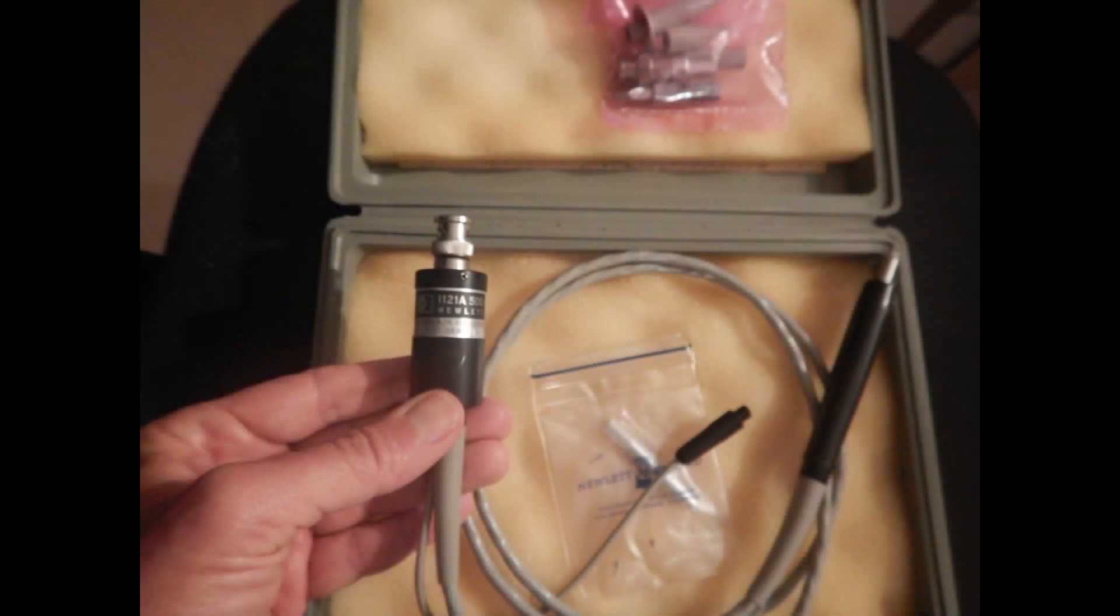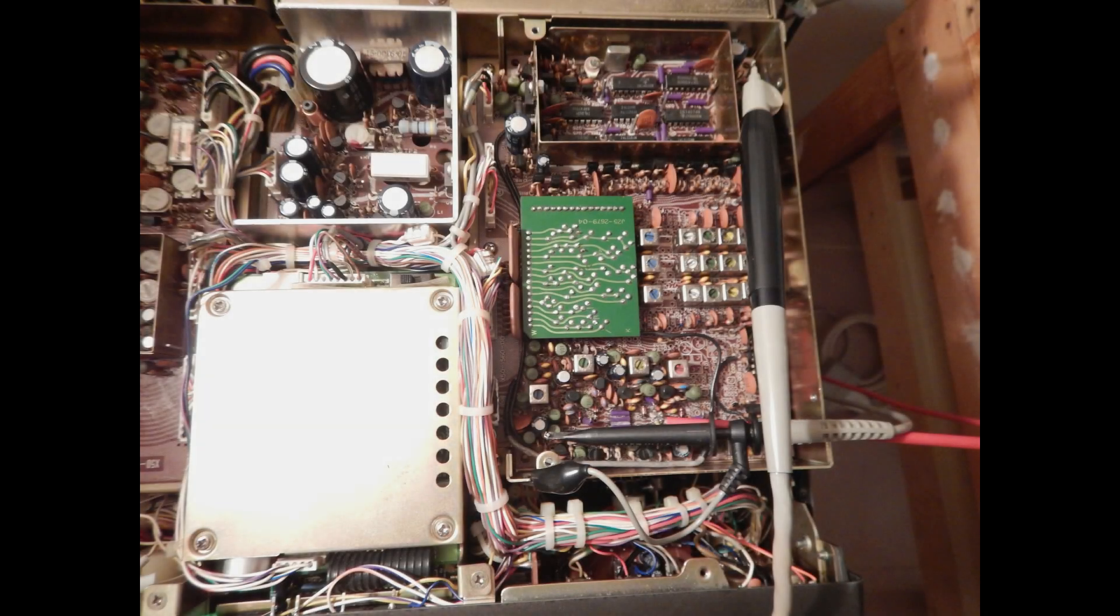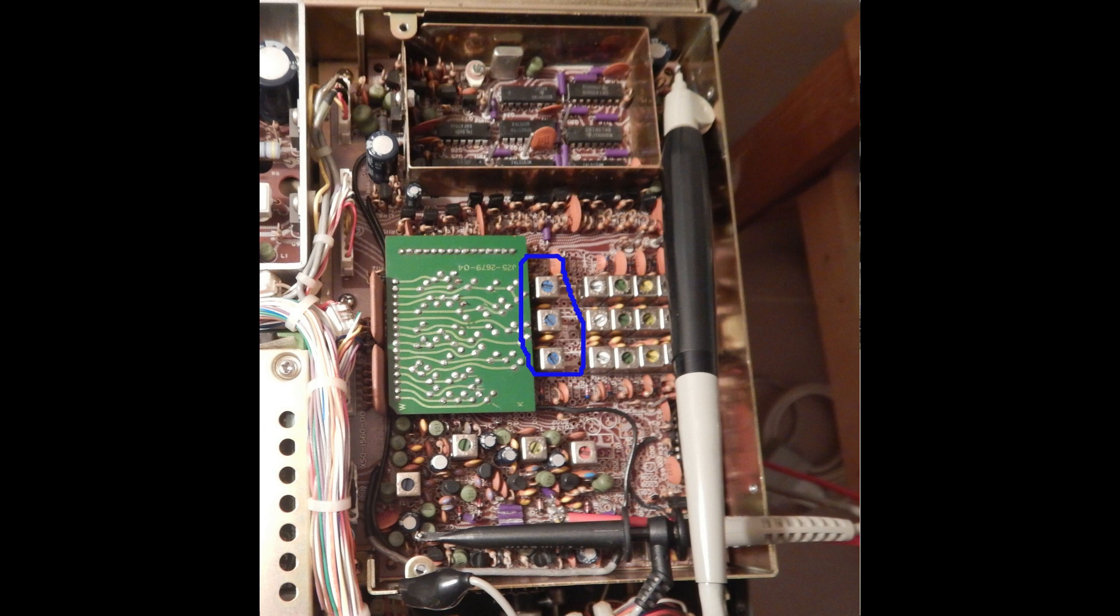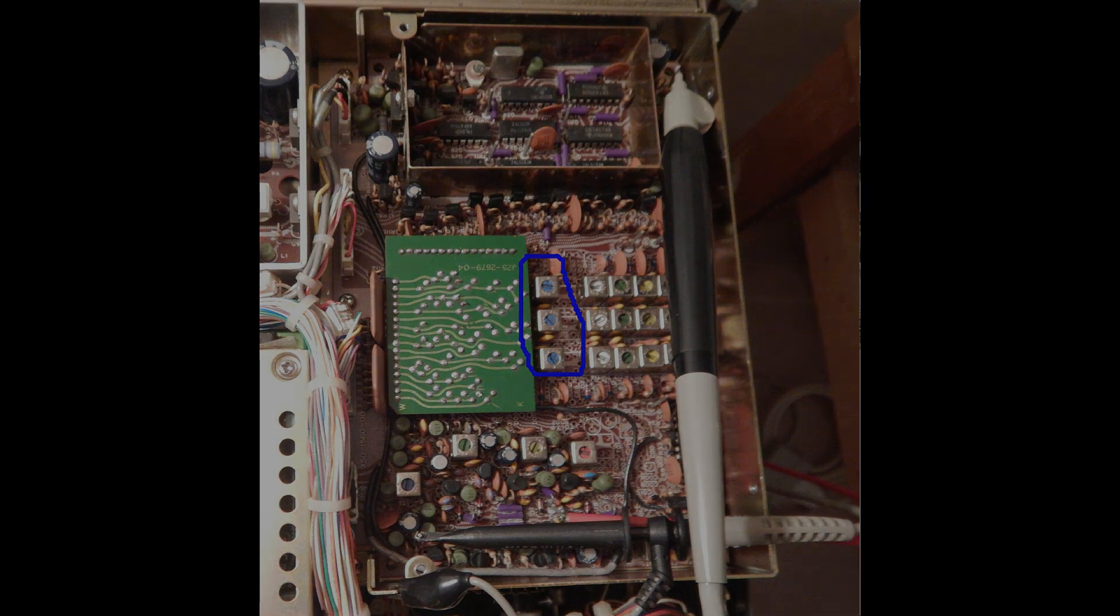I'm going to use an active probe to avoid loading the circuit under test. And here is the complete setup. The oscilloscope probe is just used to inject the signal from the generator on the right test point. The three coils to be tuned are the ones circled with the blue color in this image.